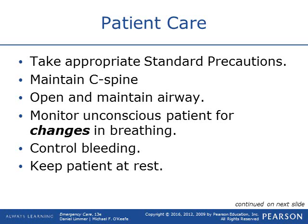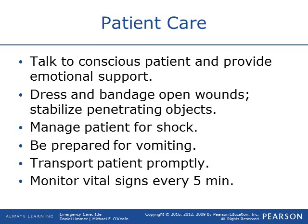Patient care for a traumatic brain injury: always take BSI precautions and maintain C-spine. Open and maintain that airway — with head injuries there's generally a possible cervical injury, so use a modified jaw thrust. Monitor changes in breathing patterns — whether it's fast, slowing, or irregular. Control any bleeding and keep the patient at rest, trying to keep them calm. Keep them conscious, talk to them, providing emotional support. Cover all wounds; stabilize anything penetrated or impaled.